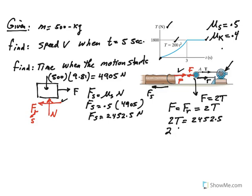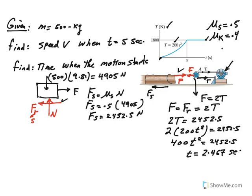Remember T is initially 200t squared, so this becomes 400t squared equals 2452.5, and then you can solve for time. The time comes up to be 2.467 seconds, so the motion actually starts at this time.